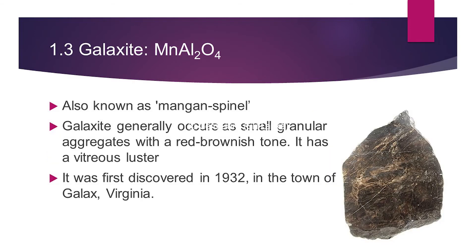Galaxite is also known as mangan spinel. Galaxite generally occurs as small granular aggregates with a reddish or brownish tone and has a vitreous luster. It was first discovered in 1932 in the town of Galatia in Virginia, and because of that it has been named galaxite.